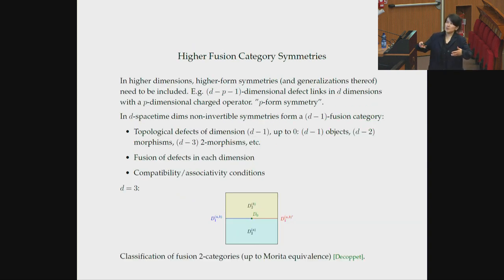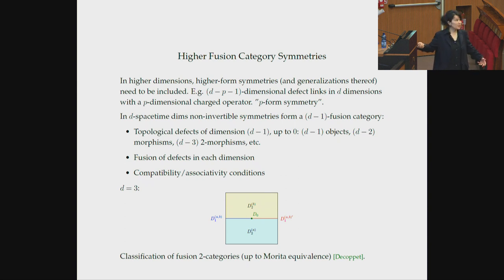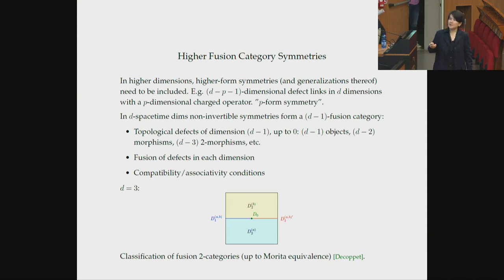The structure governing these symmetries is higher fusion category symmetry. In addition to lines, you generically have p-form symmetry generators — topological defects acting on p-dimensional extended operators, of dimension d minus p minus 1 in d dimensions. In d dimensions you would have a (d minus 1)-fusion category symmetry with topological defects of dimension d minus 1, d minus 2, all the way to 0, all satisfying composition and associativity conditions.